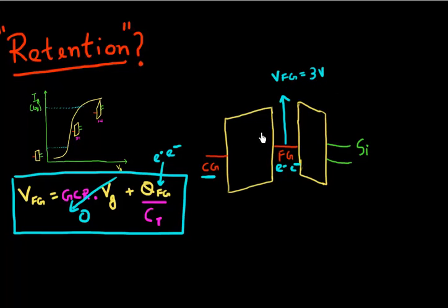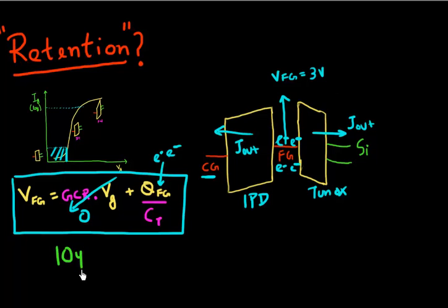So what I need from my friend, this tunnel equation, is that at this three electron volt, my tunnel current both across my IPD and also across my tunnel oxide, they are small enough such that all of these electrons don't leak out. And traditionally the requirement for retention on flash memory cell has been that once you program it, you need to retain it for 10 years.